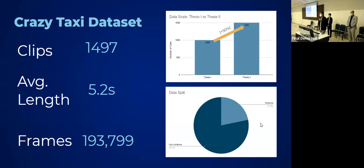Looking at the pie chart at the bottom right corner, it clearly shows our data split. We have basically two classes where violence comprises roughly 22% of our data and non-violence comprises around 78%. The bar chart on the top shows our progress since thesis one. We managed to expand our dataset from around 1000 clips to roughly 1500 clips that we have now with an average of 5.2 seconds, and we have roughly 200,000 frames worth of data.